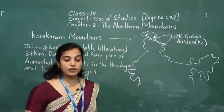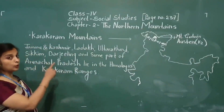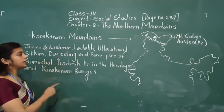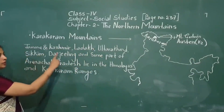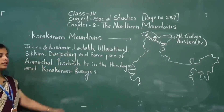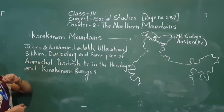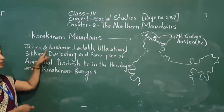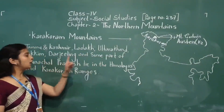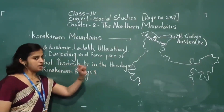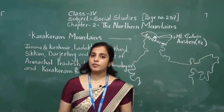Today we learn about the Karakoram mountain ranges and the life of the people in this region. The regions included in the Karakoram and Himalaya mountain ranges are: Jammu and Kashmir, Ladakh, Uttarakhand, Sikkim, Darjeeling, and some parts of Arunachal Pradesh.